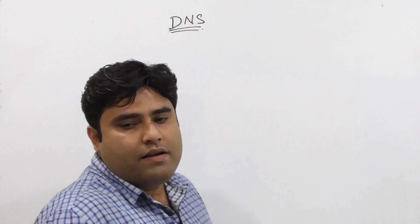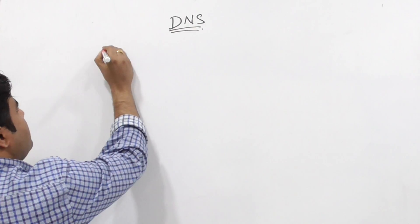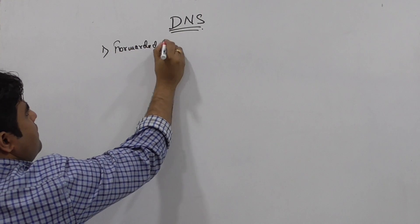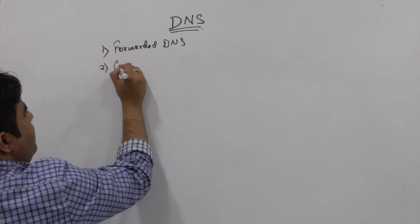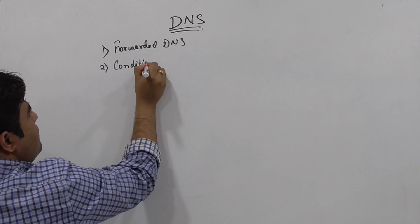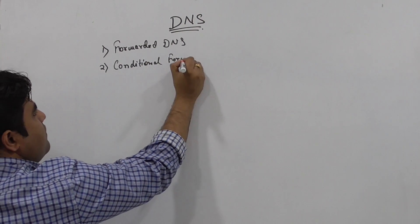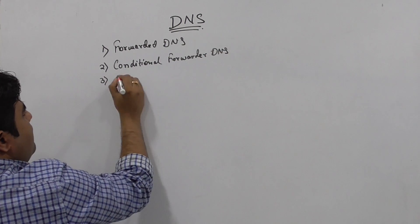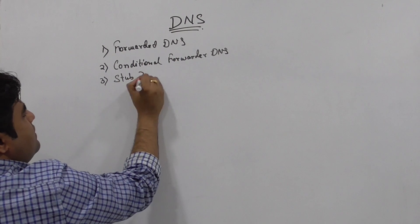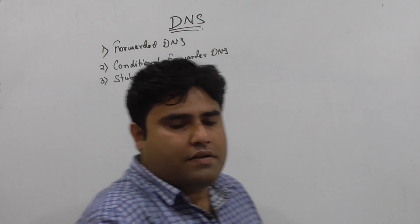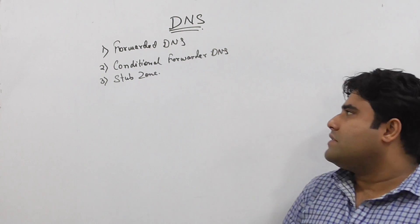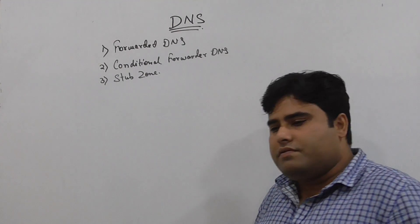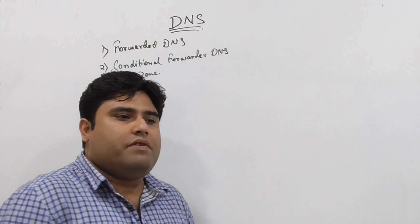The topic of discussion is DNS. Number one is forwarder DNS, number two is conditional forwarder DNS, and number three is the stub zone. First we will go through the theory, understand the concept, and then we will proceed to the practical.